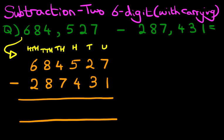First step: check the sign — it is minus. We always start with the column on the right-hand side first. Units column: what is seven minus one? Seven minus one is six. Tens column: two minus three — the number two is smaller than three, so we cannot do this in its current format.